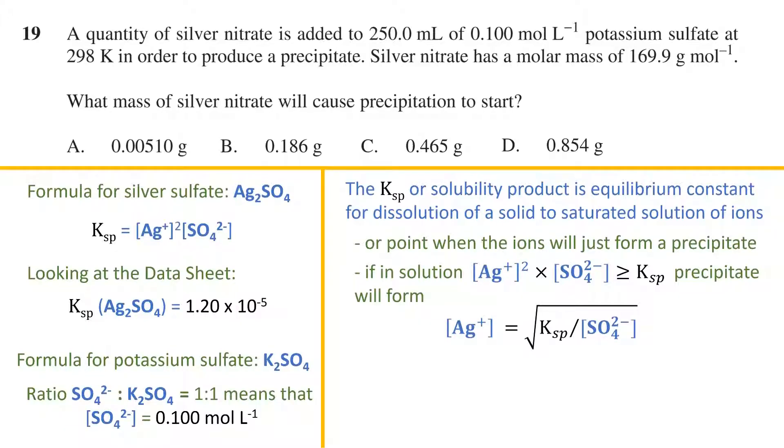As the silver nitrate is made up of silver we have rearranged to make the silver concentration the subject. Plugging in our values we end up with 0.01095 moles per litre.